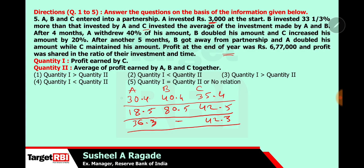After 5 months, B left the partnership so B's investment becomes 0. A doubled his investment to 36, and with 4 + 5 = 9 months gone, there are 3 remaining months. C maintained his investment at 42 for 3 months. Now we calculate totals: A = 120 + 90 + 108 = 318; B = 120 + 400 + 0 = 560 (160 + 400); C = 140 + 210 + 126 = 476.